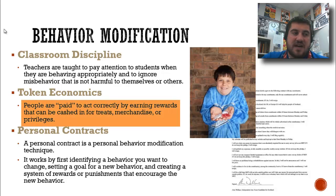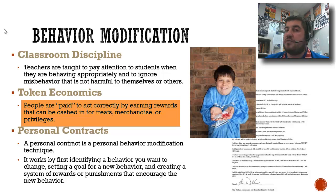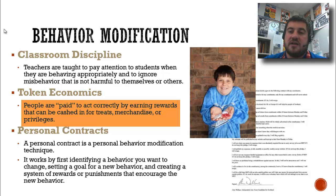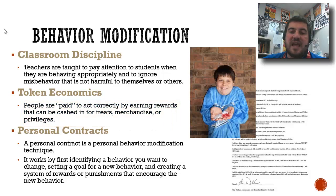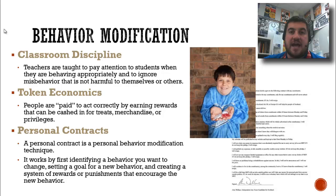Token economies — maybe you had some of these in middle school. People are paid to act correctly by earning rewards that can be cashed in for treats, merchandise, or privileges. In this picture, there is a boy with autism who is very proud that he was able to behave in an appropriate way and earn his poker chips. He can now cash those in for a reward. That works to modify behavior.